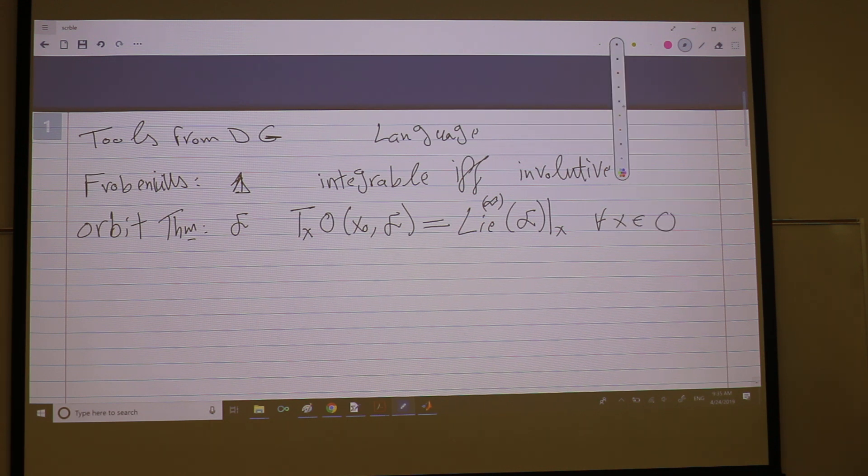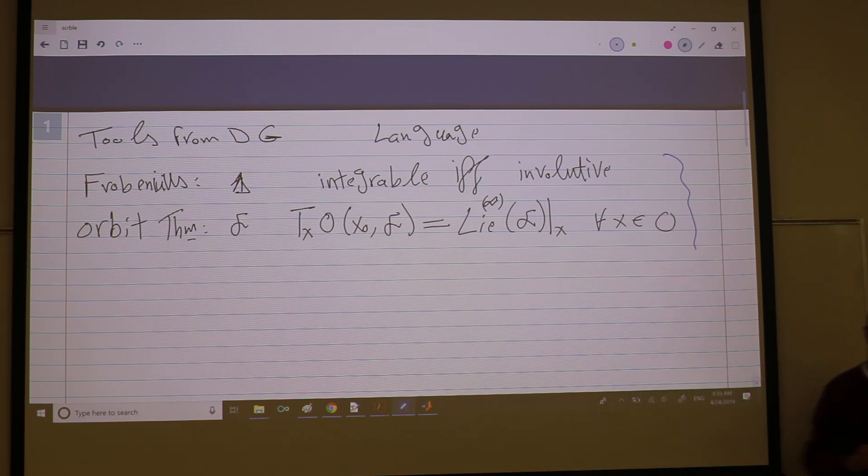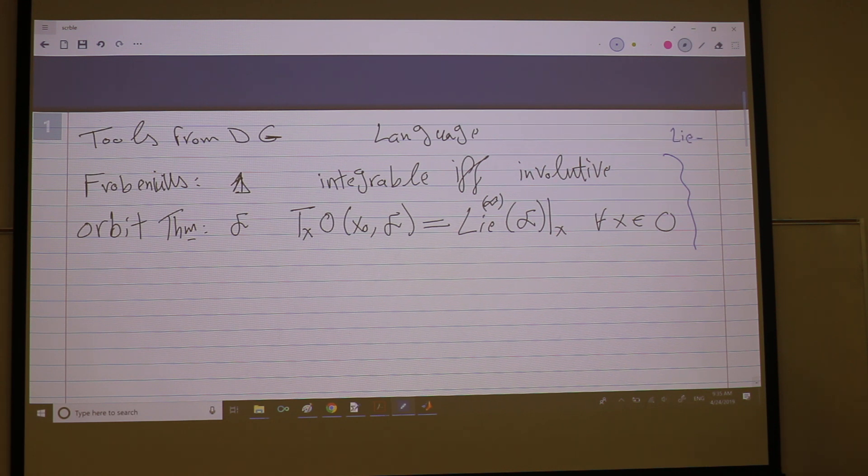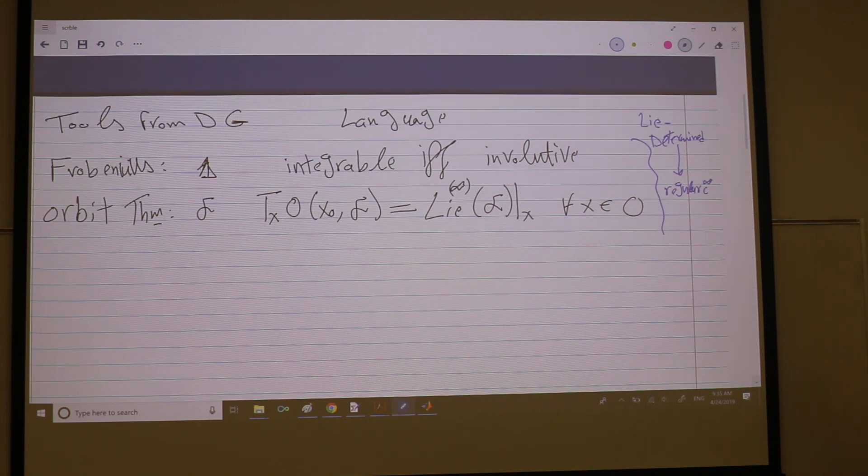And these two facts, the necessary and sufficient and the exact equality, these are for what we call Lie-determined systems. The name is very expressive. Systems whose characteristics are determined by Lie brackets and Lie derivatives. This includes regular C-infinity and analytic.